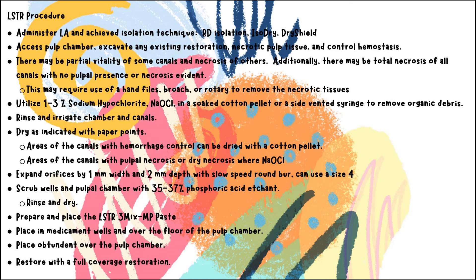To accomplish this, I'll use 1–3% sodium hypochlorite in a soaked cotton pellet or a side-vented syringe to remove organic debris. I'll then dry any irrigated areas with paper points, and control any hemorrhage with dry cotton pellets. After drying the chamber and canals, I'll expand each orifice by 1mm width and 2mm depth with a slow-speed round burr — this can be accomplished with a size 4 slow-speed round burr. The wells and pulp chamber are then scrubbed with 35–37% phosphoric acid etching, then rinsed and dried.